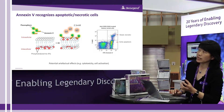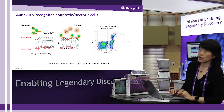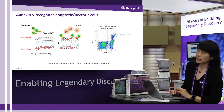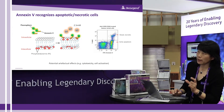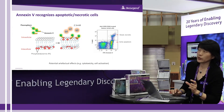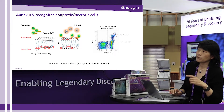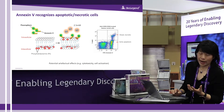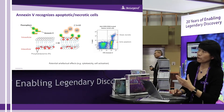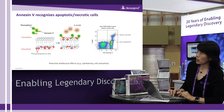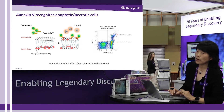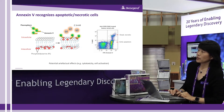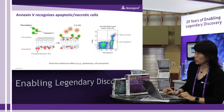Taking this advantage, Annexin V has been widely used and recognized as a specific marker for phosphatidylserine. Annexin V is a small recombinant protein that can be conjugated with different fluorophores and binds to phosphatidylserine in a calcium-dependent manner.